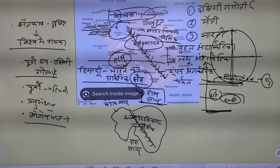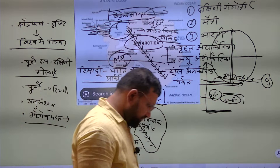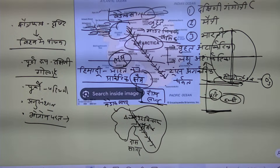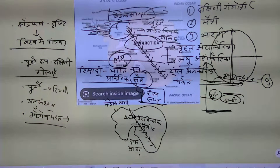In this mountainous region, the highest peak of Antarctica is Mount Vinson Massif. That's all for Antarctica — all the continents are now covered.